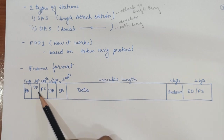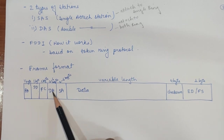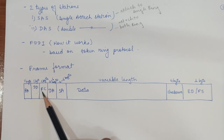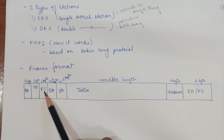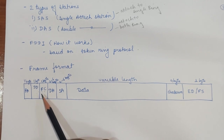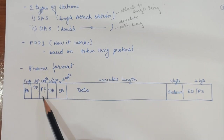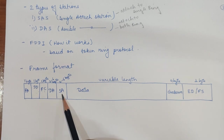The first field is PA (Preamble) — a unique sequence for preparing the station for the upcoming frame or token. Next is the Start Delimiter, which marks the beginning of a frame. Then there is the Frame Control field — a one-byte field that specifies whether this is a data frame or a control frame. After that is the Destination Address.